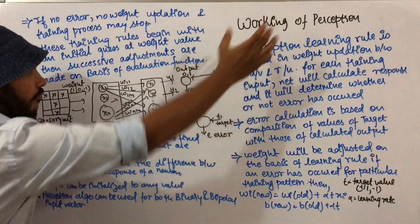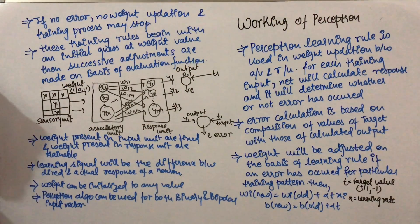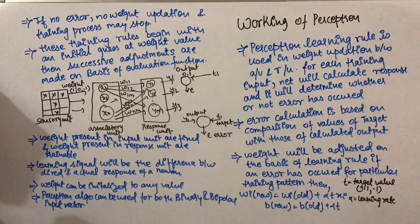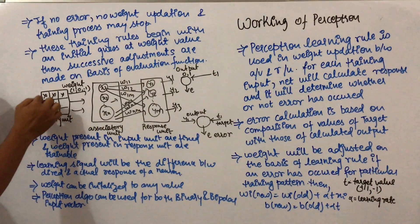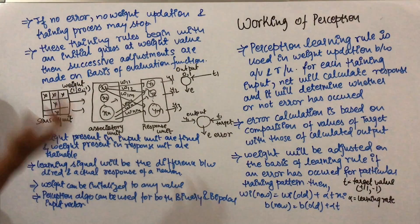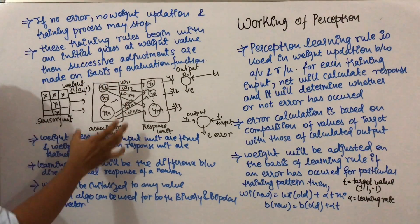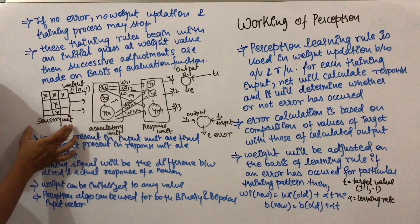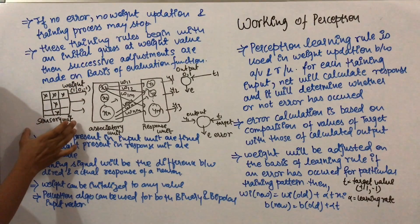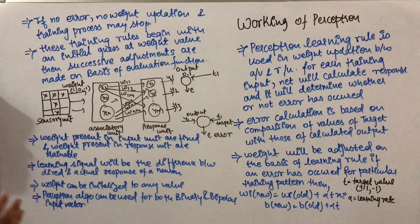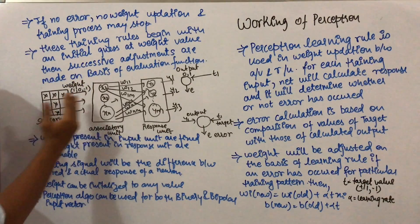We can understand the working of perceptron with a diagram. First is the sensory unit. Perceptron is used for image recognition of black and white images. Suppose the image is represented in the form of a matrix, showing where the density of black and white color is present. For black color, we mark it with X, and the weight of the sensory unit will be in bipolar form — that is, minus 1, 0, and 1. This sensory unit is passed to the associatory unit, and the weight between the sensory unit and the associatory unit is fixed, because the sensory unit provides the input and input is not going to change.